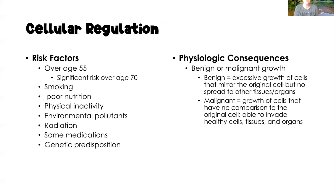Risk factors for impaired cellular regulation include aging — especially over age 55 we can see problems, and over age 70 the risk factors are significant. Smoking impairs our cells' ability to regulate themselves normally and maintain homeostasis. Poor nutrition is another big component. Physical inactivity, exposure to environmental pollutants, and radiation are also risk factors. Some medications impair cellular regulation, such as chemotherapy, as does genetic predisposition.